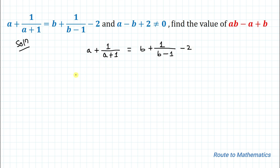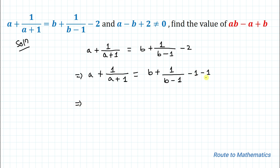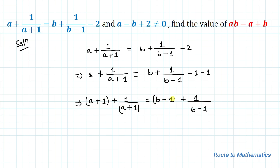From the given equation, we can write a + 1/a + 1 = b + 1/b − 1, and these two can be written as minus 1 minus 1. In the next step I will take this minus 1 to the left hand side. So what I am getting is a + 1 + 1/(a+1) = b − 1 + 1/(b−1). Here we have a+1 on the left and b−1 on the right. Let's take x = a + 1 and y = b − 1.